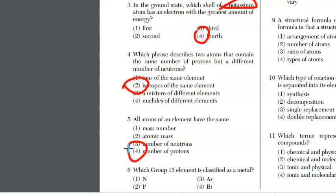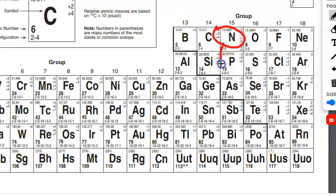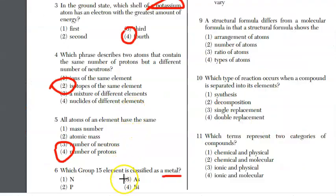For question 6, which group 15 element is classified as a metal? We're checking out group 15, which starts with nitrogen and phosphorus. Both of these are non-metals. Then we have arsenic and antimony, which are our semi-metals, and then bismuth as our metal. That's choice number 4.